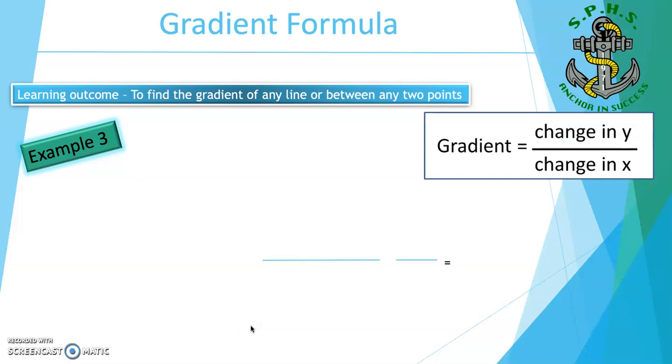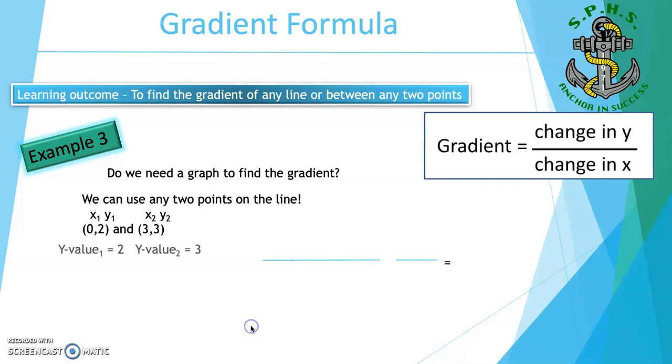Example 3. You can use the gradient formula to find the gradient of a line. Again, you can choose any two points on the line. The first step is to label the points x1, y1 and x2, y2. Then we substitute this into the formula. The formula states y2 minus y1 over x2 minus x1. In this case, we have found y2 to be 3 and y1 to be 2. x2 is 3 and x1 is 0. Therefore, substituting into the formula gives us 3 minus 2 over 3 minus 0. Therefore, the gradient of a line with these two points is 1 over 3.